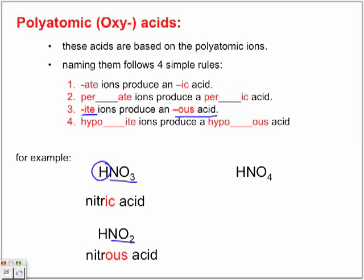Now we move over to HNO4. The NO4 is a derivative of the nitrate ion, but because we've gained an oxygen, it's a per nitrate ion. And a per nitrate ion now, looking at step number two here, becomes a per nitric acid.